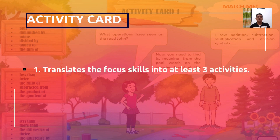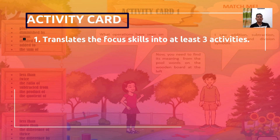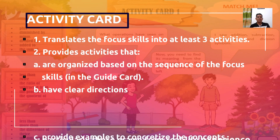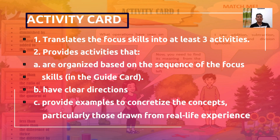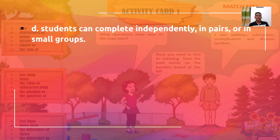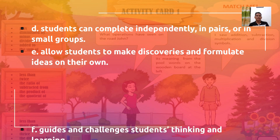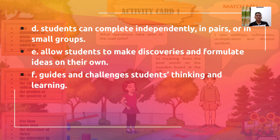What is an activity card? Activity card translates the focus skills into at least three activities. It provides activities that are organized based on the sequence of the focus skills in the guide card. Activity card provides activities that have clear directions and provide examples to concretize the concepts, particularly those drawn from real life experience. It also provides activities that students can complete independently, in pairs, or in small groups, and activities that allow students to make discoveries and formulate ideas on their own, guiding and challenging students' thinking and learning.